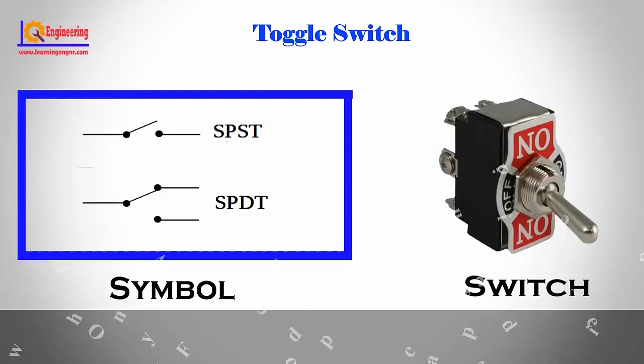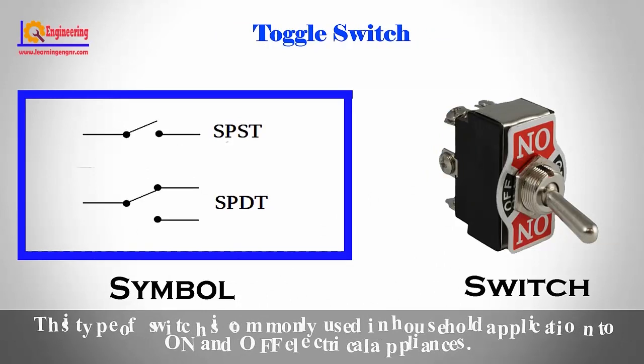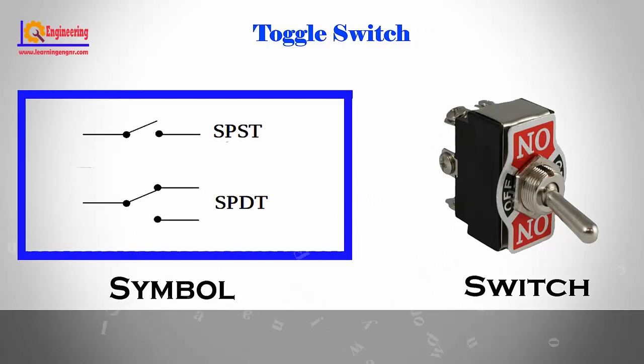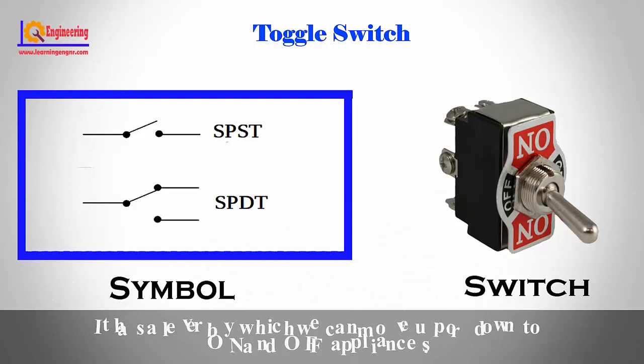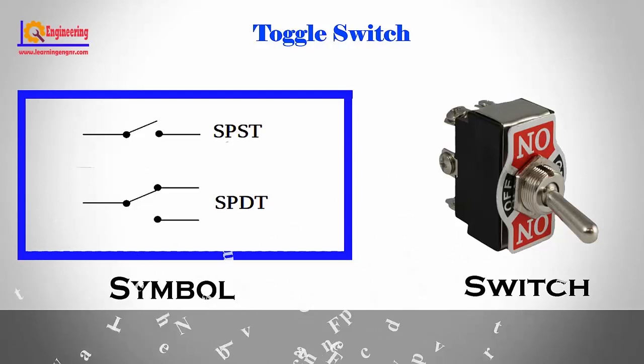Toggle switch. This type of switch is commonly used in household applications to turn on and off electrical appliances. It has a lever by which we can move up or down to turn appliances on and off.